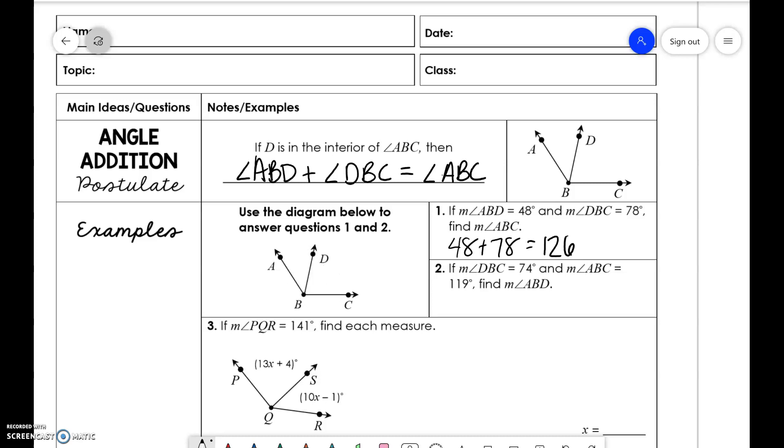All right. Now, likewise, if we did the second one, we have DBC is 74 and the whole angle ABC is 119. So we're taking that whole angle of 119 and we are subtracting 74 from it and we get 45.